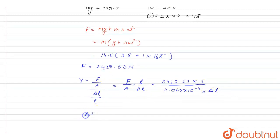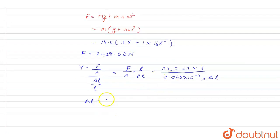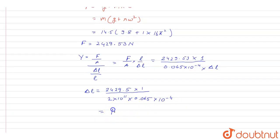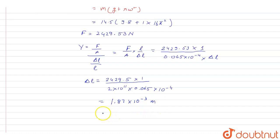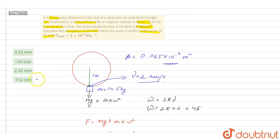So I will write delta L that will be equal to 2429.5 into 1 divided by Y that is 2 into 10 raised to the power 11 into 0.065 multiplied by 10 raised to the power minus 4. If I simplify this, I will get 1.87 into 10 raised to the power minus 3 meters. 10 raised to the power minus 3 meters can also be written as 1.87 millimeters. So the correct option according to this result will be option B.